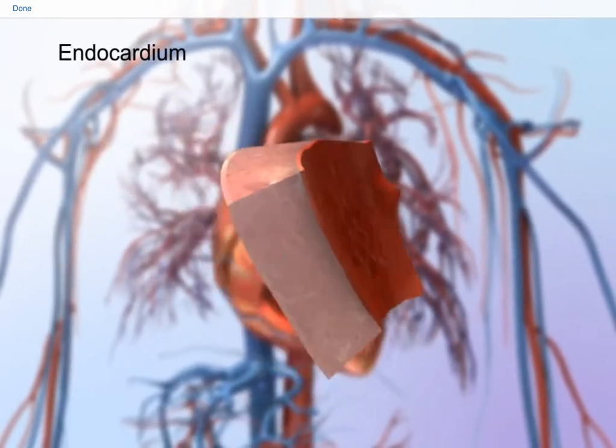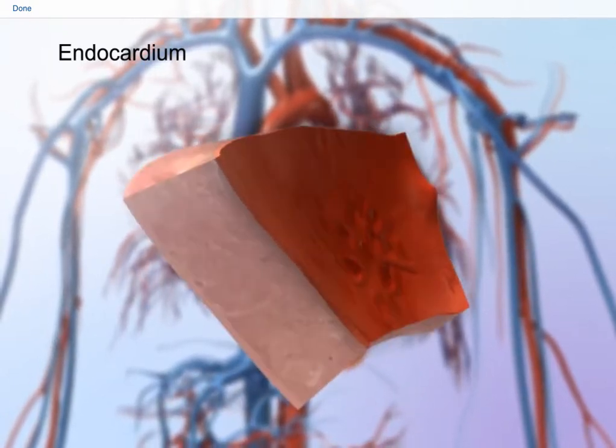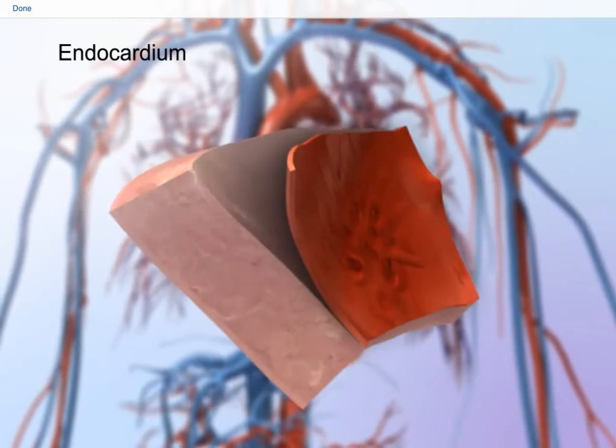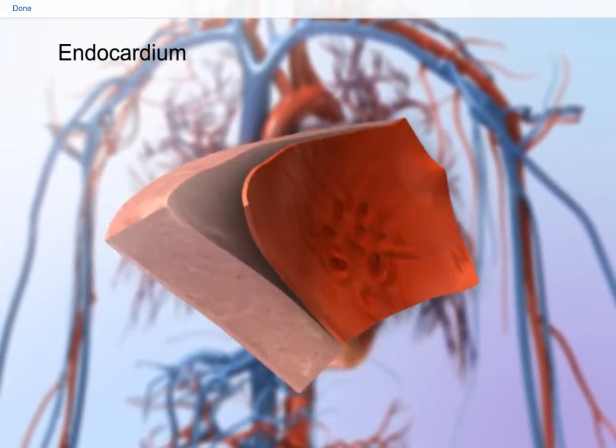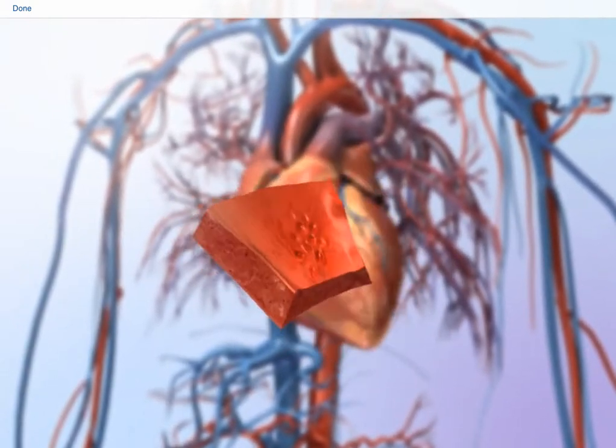The endocardium is the inner layer of the heart wall, lining the heart's interior structures, the chambers, valves, and papillary muscles. The endocardium is continuous with the lining of the blood vessels that attach to the heart.